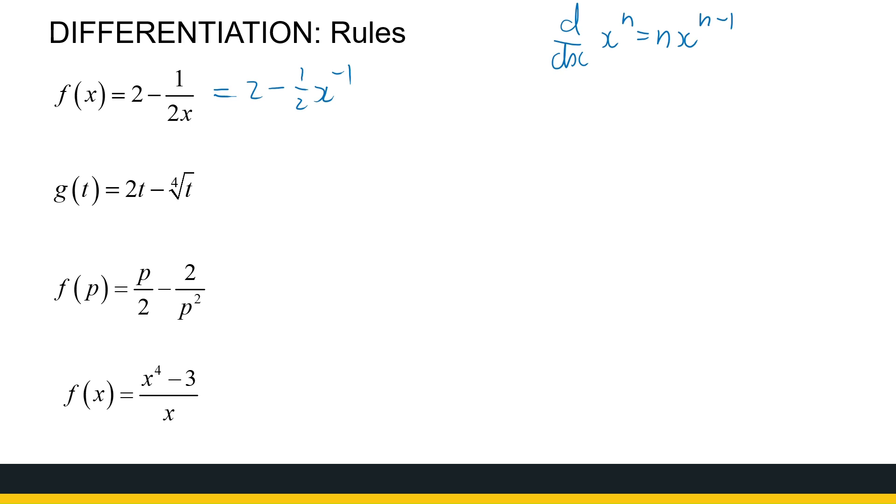Now it's in the right format. I've got a constant, the difference between two functions, so I can use my rules. So the derivative of this function, and watch, I'm not just putting an equal sign next to the function, because a function is not necessarily equal to its derivative. It's only rare cases when that happens.